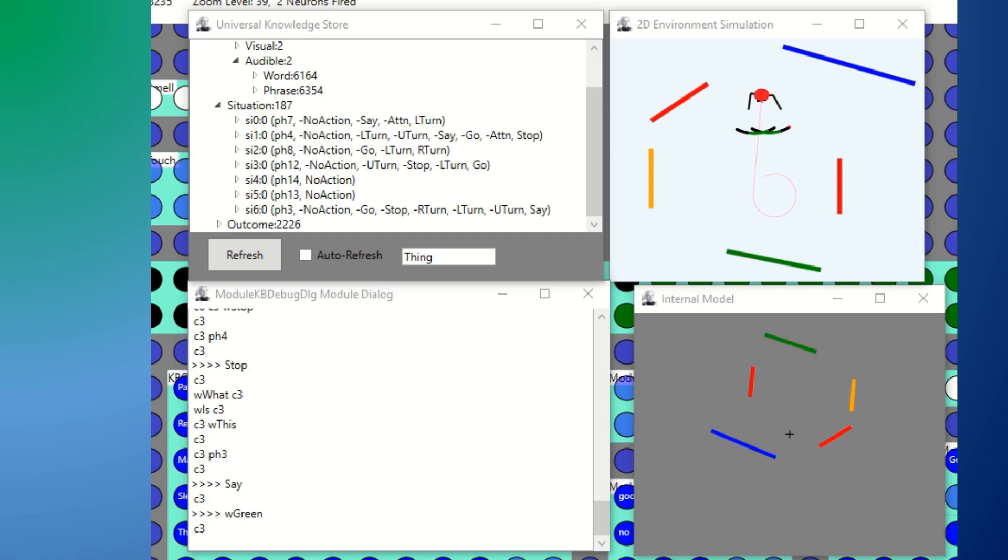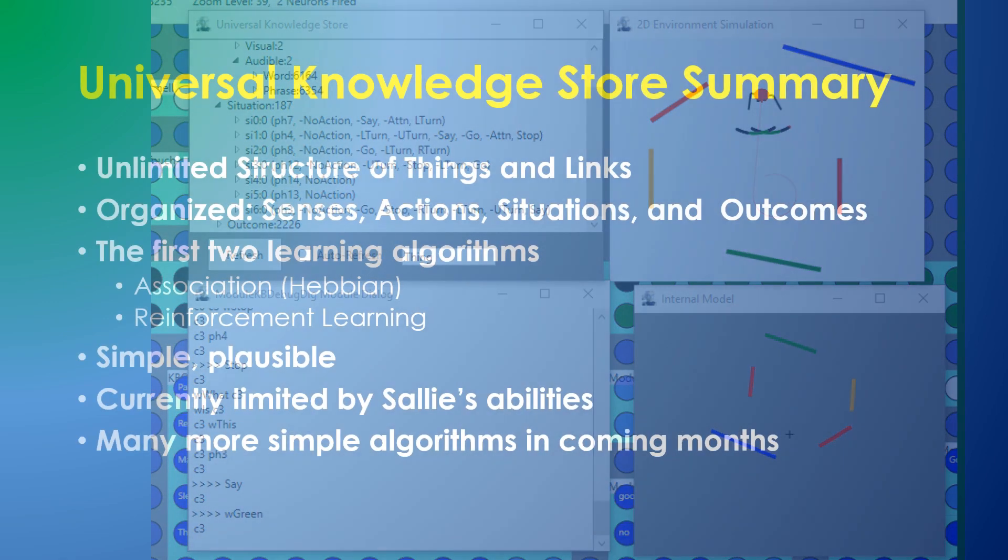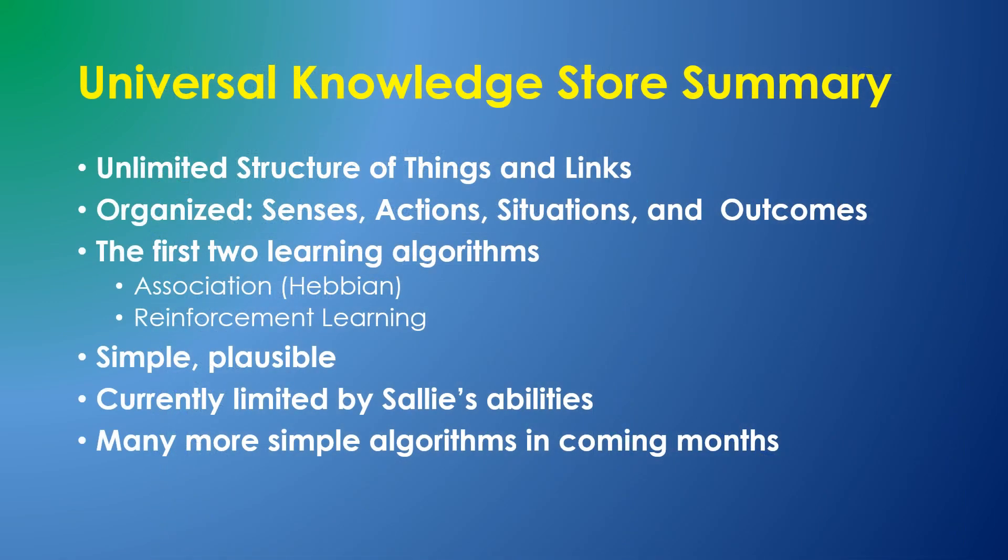In summary, these recent four videos introduced Sally's universal knowledge store. It can handle an unlimited structure of things connected by links and is presently organized to handle Sally's senses, actions, situations, and outcomes.